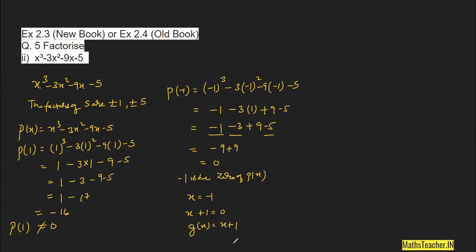To find the remaining two factors, I'm going to use long division — dividing the given polynomial by (x + 1). So I will divide p(x) by g(x). Before dividing, make sure both p(x) and g(x) are in standard form. We have p(x) = x³ − 3x² − 9x − 5 divided by (x + 1).